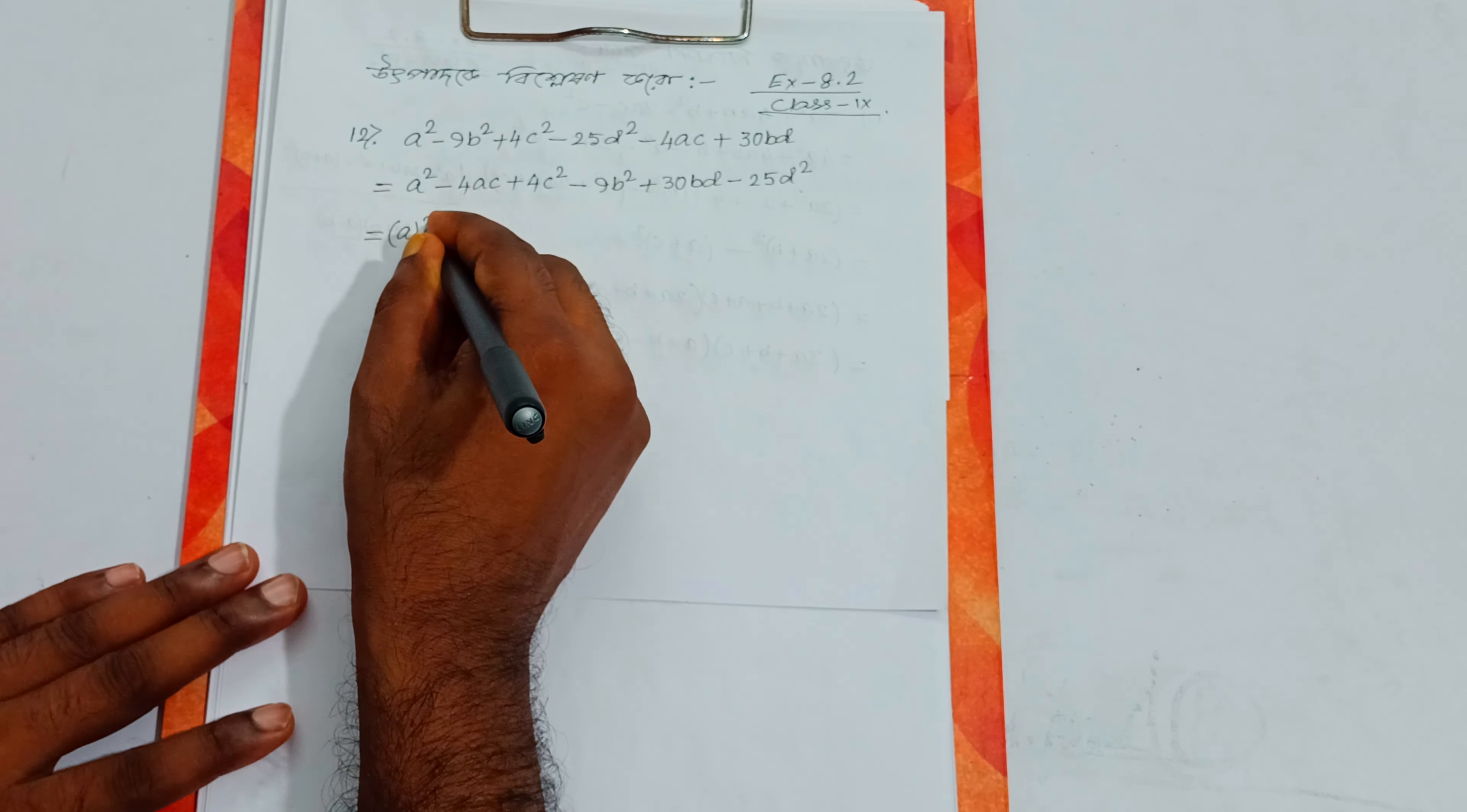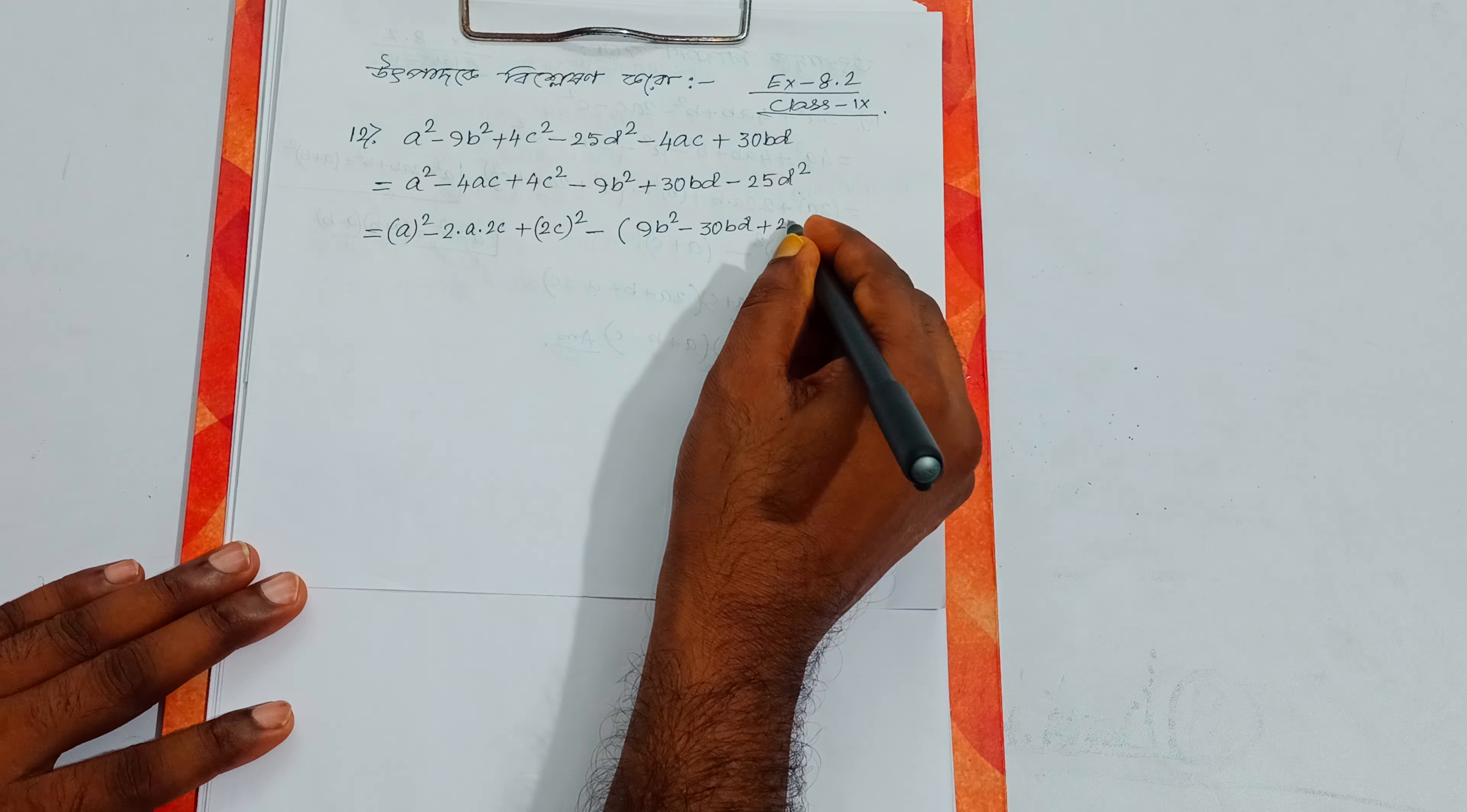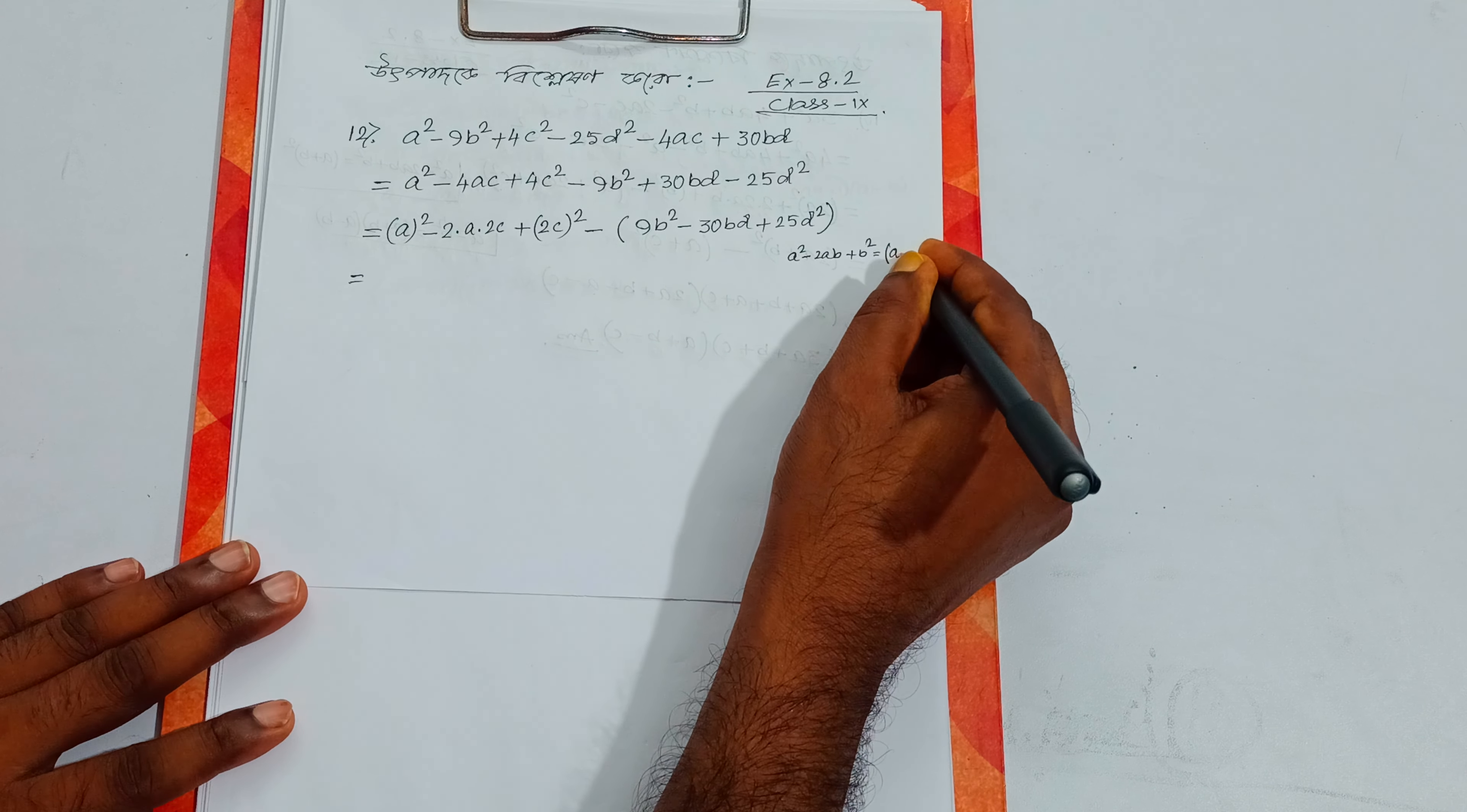First, recall the perfect square formula: a whole square minus 2a into 2c plus 4c square. Remember that a² minus 2ab plus b² equals (a minus b) whole square. This is the key formula we'll use.